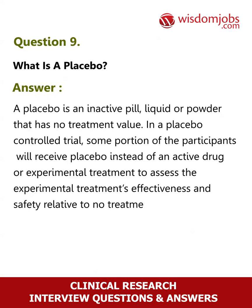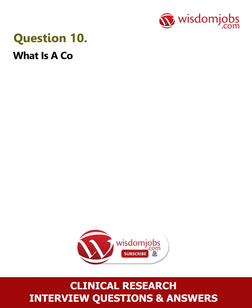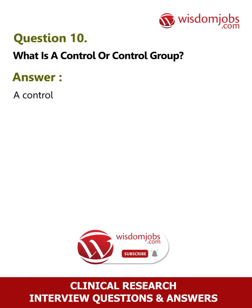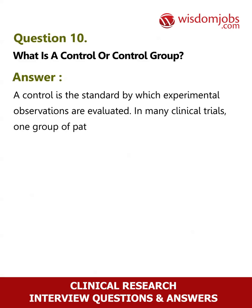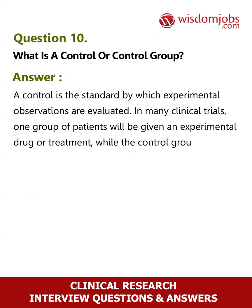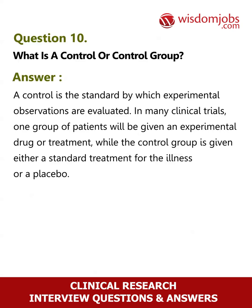Question 10: What is a control or control group? Answer: A control is the standard by which experimental observations are evaluated. In many clinical trials, one group of patients will be given an experimental drug or treatment, while the control group is given either a standard treatment for the illness or a placebo.